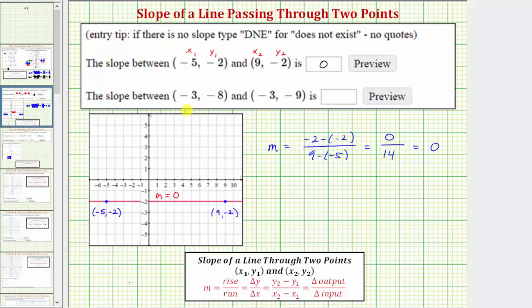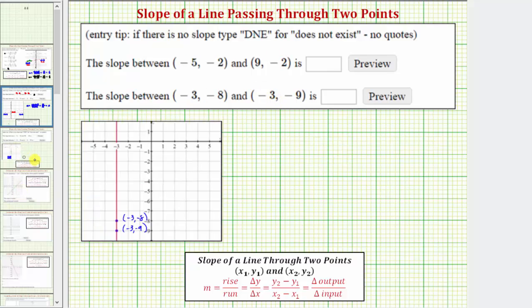Now let's find the slope of the line passing through the second set of points. Let's go ahead and plot these two points on the coordinate plane and sketch the line. The point negative three comma negative eight is this point here, and negative three comma negative nine is this point. Notice how the line passing through these two points is a vertical line. Remember, the slope of all vertical lines is undefined.